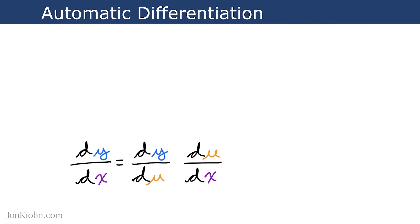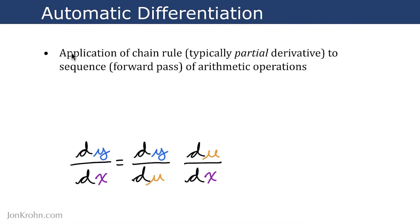At a high level, the way that automatic differentiation works is by applying the chain rule, typically the partial derivative chain rule. We're going to get into partial derivatives coming up in the next subject, calculus 2, which focuses on partial derivatives. But for now, we don't need to worry about them. We're going to ignore this little bit of extra complexity for now so that I can get you excited about getting started with automatic differentiation.